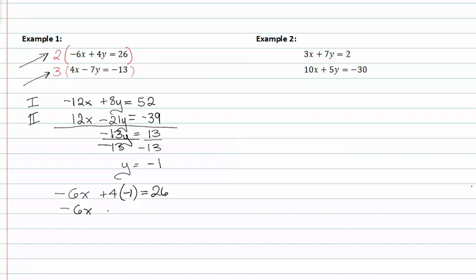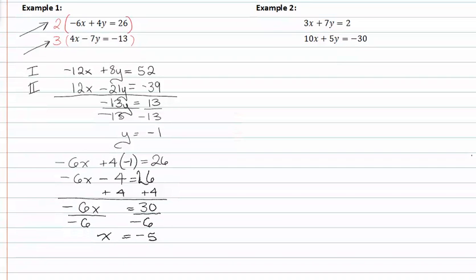Multiplying through and solving for x, I add four to both sides and get -6x = 30. Dividing both sides by -6 gives me x = -5. So my coordinate point or the solution to this system is (-5, -1).